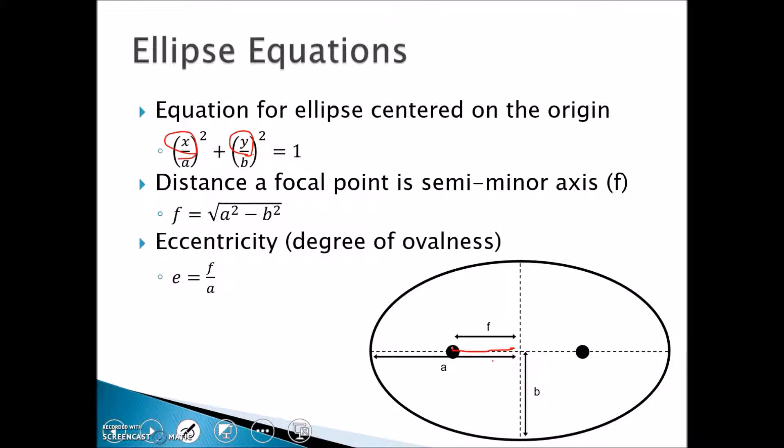The eccentricity, which is often referred to as the amount of ovalness, is that focal point length divided by a. Now if the eccentricity is zero, we're talking about a perfect circle. The greater the eccentricity, the more ovalness we're going to see on the ellipse. The planets for the most part have a very low eccentricity. The Earth's eccentricity is like 0.02, so it's almost a circular orbit but it's not quite, and that's what we see a lot of times with the planets.